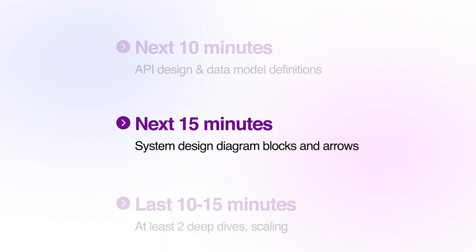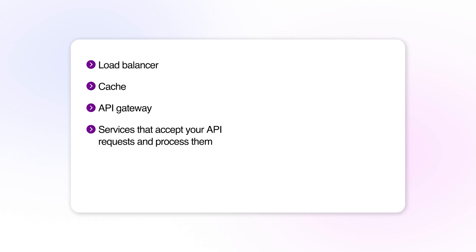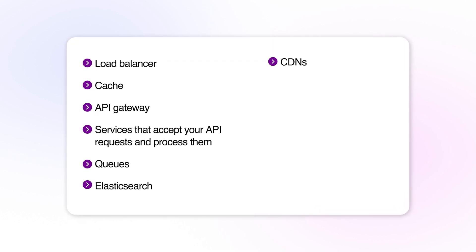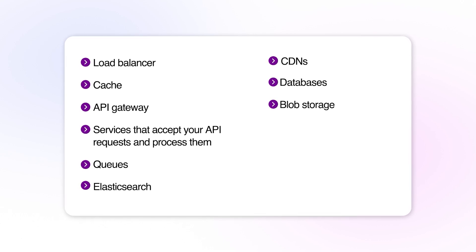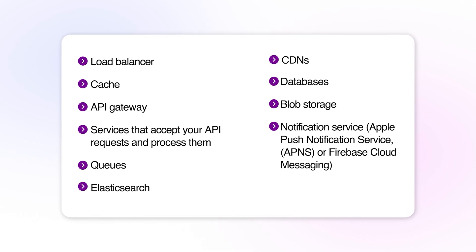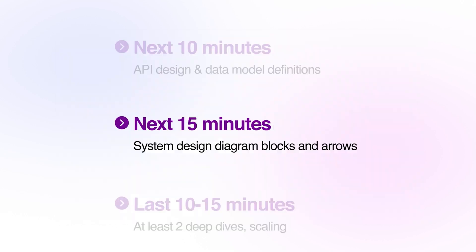For the next 15 minutes, draw out the actual system design diagram — building blocks and how they fit together. For example, you might include a load balancer, cache, API gateway, services that accept your API requests and process them, queues, Elasticsearch, CDN, databases, blob storage, notification systems like Apple Push Notification Service or Firebase Cloud Messaging, and a logging framework.